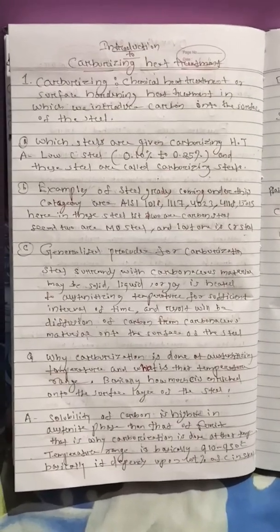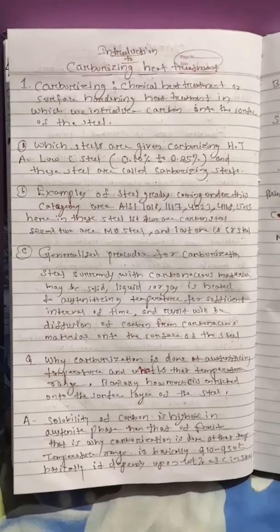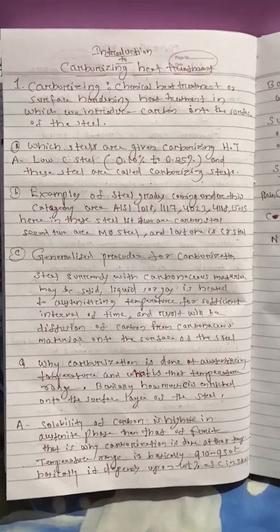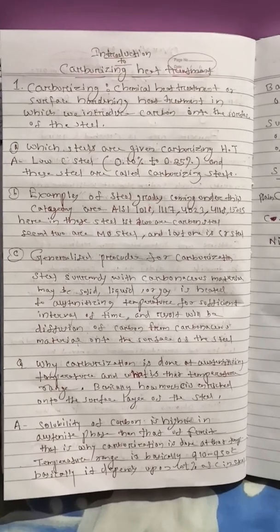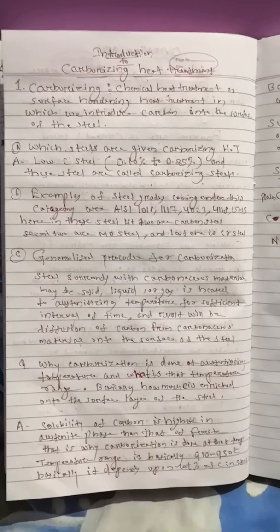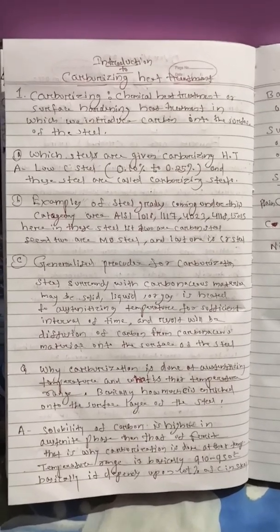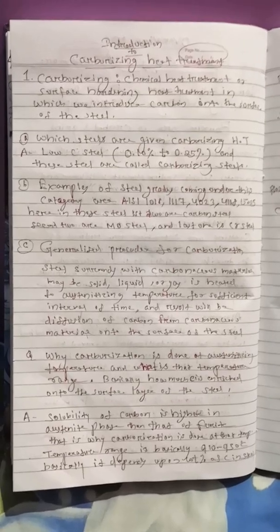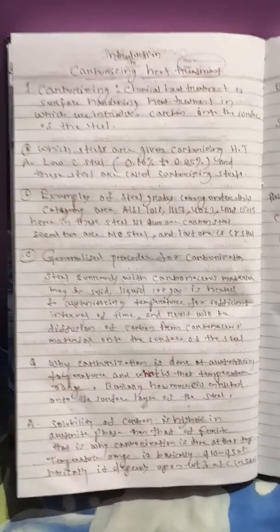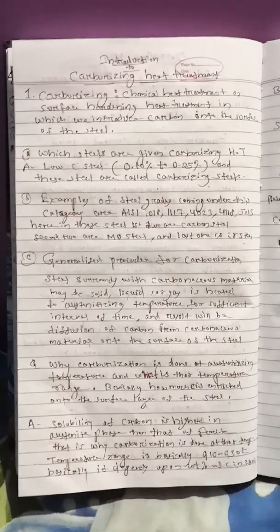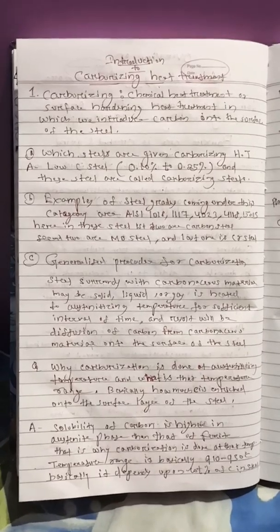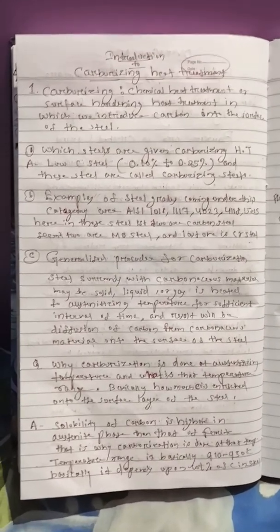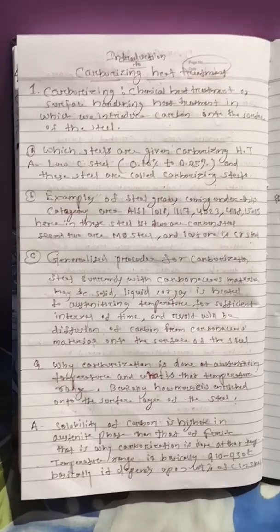So now why carburization is done at austenitizing temperature not at ferritic temperature or ferritic zone? This is because the solubility of carbon is higher in austenite phase compared to that of ferrite phase. And what is the temperature range? Basically the temperature range is 910 to 930 degree centigrade for carburizing, but actual temperature depends upon the weight percentage of carbon.